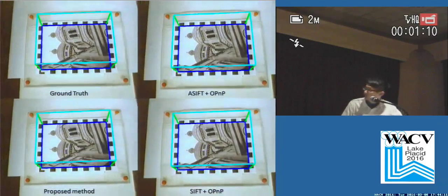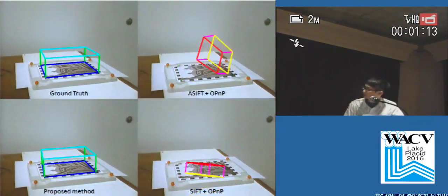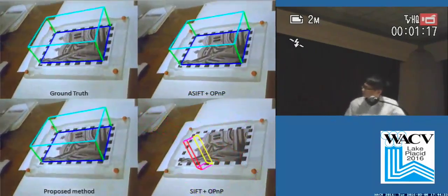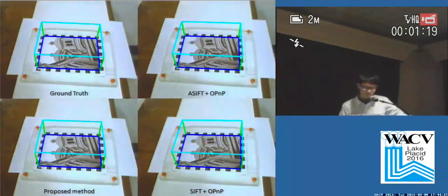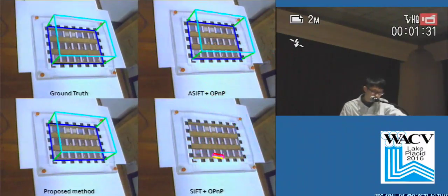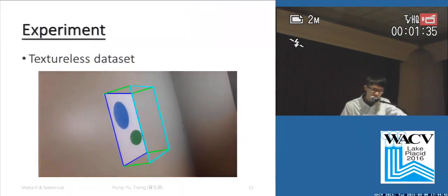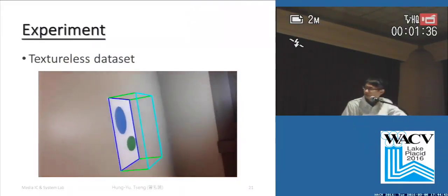Here is one of the videos. In this video, the target image is rich in features, so the ASIFT method performs well. But in the second video, the target image contains lots of repetitive features, so the feature-based method fails to give the correct estimation.